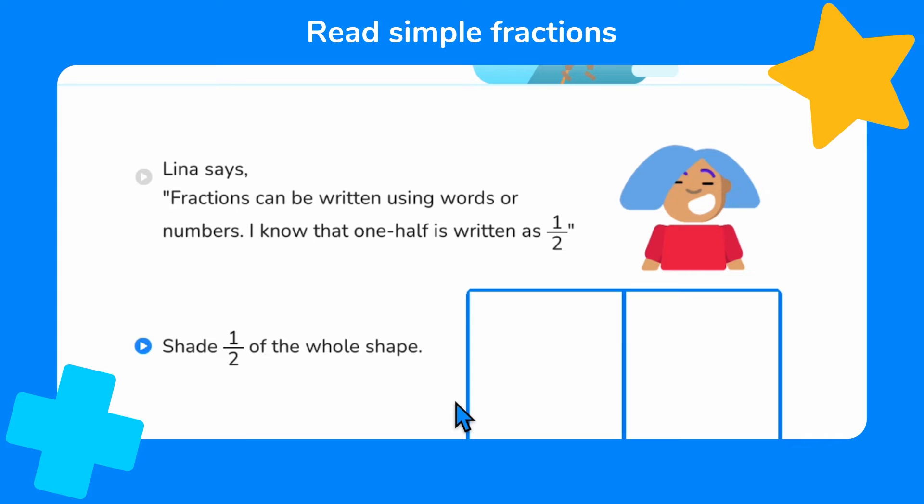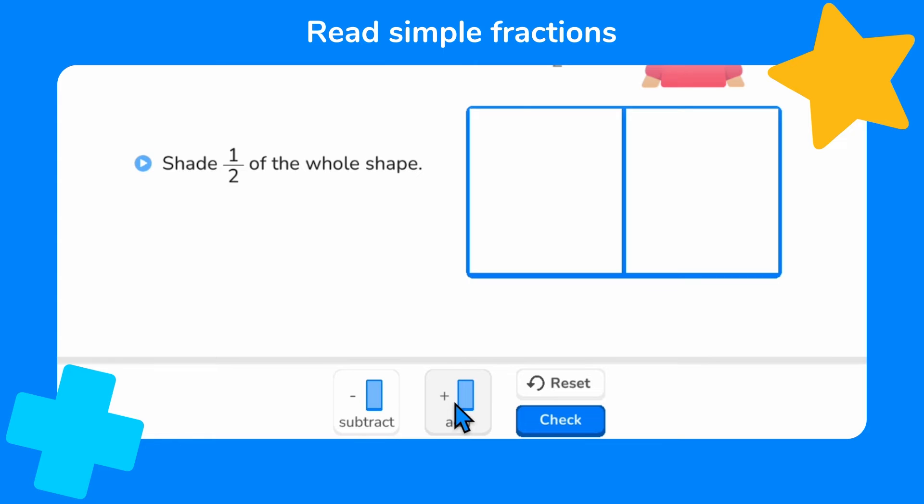Lena says fractions can be written using words or numbers. I know that one half is written as one over two. We are asked to shade one half of the whole shape. We know that one half means one out of two equal parts shaded, so we need to shade one part of this shape. Let's check. Excellent, that's another doodle star.